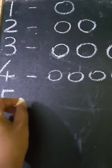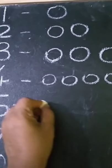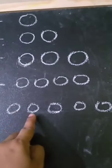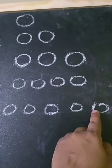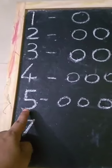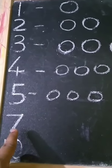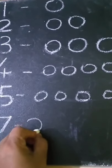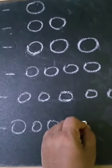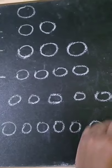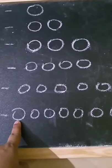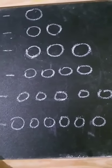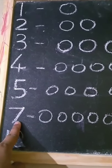Now this is number 5. So we are going to draw 5 circles. 1, 2, 3, 4, 5. Let's count: 1, 2, 3, 4, 5. These are 5 circles. And this is number 5. Now the next number is number 7. So we will draw 7 circles. 1, 2, 3, 4, 5, 6, 7. Let's count: 1, 2, 3, 4, 5, 6, 7. So children, we have 7 circles. And this is number 7.